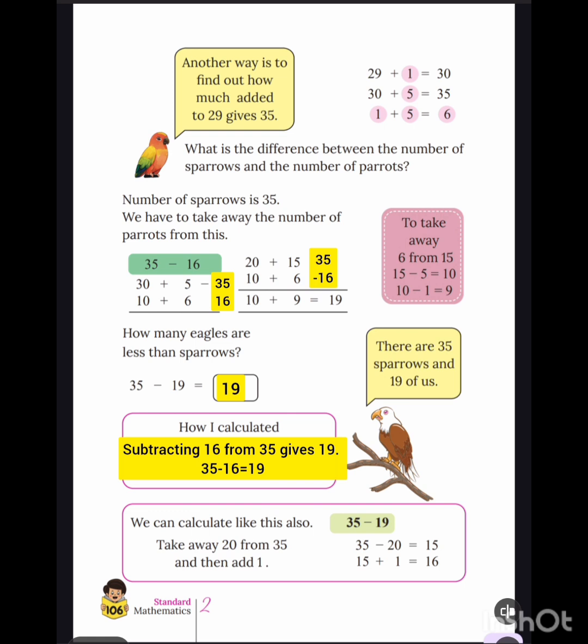13 minus 5 is equal to 8, and 10 plus 6 is equal to 16. How many eagles are less than sparrows? 35 minus 19 is equal to 16. Subtracting 16 from 35 gives 19.